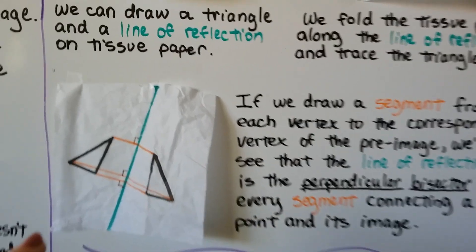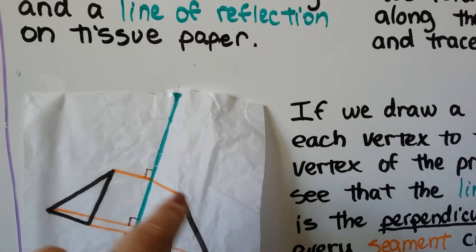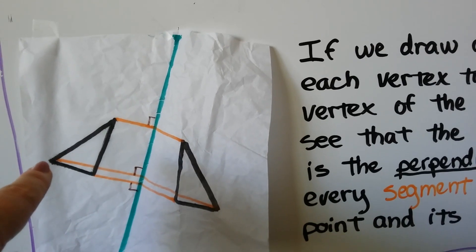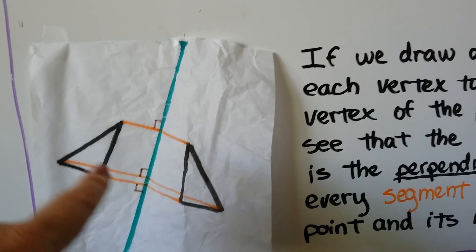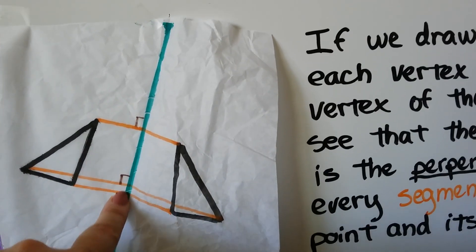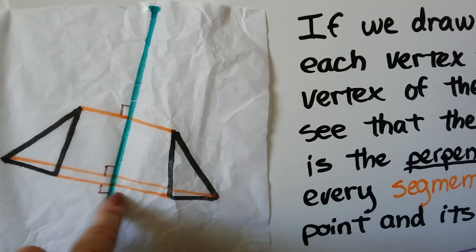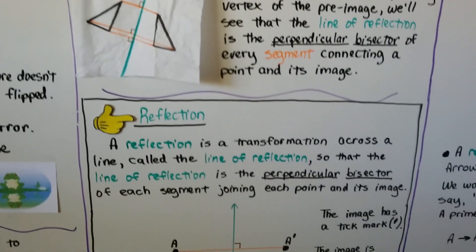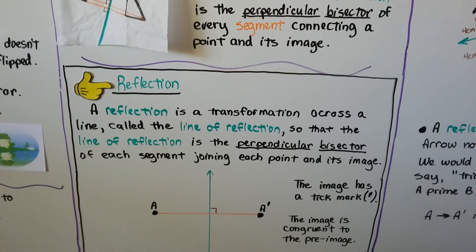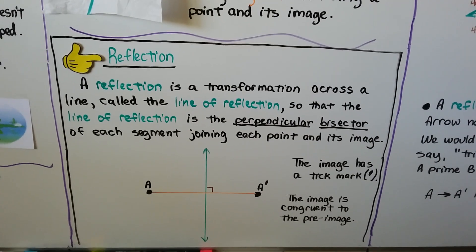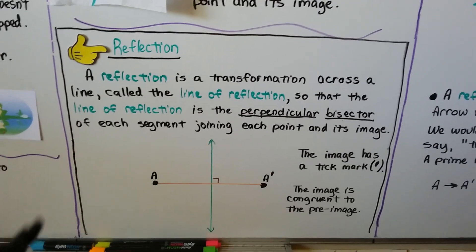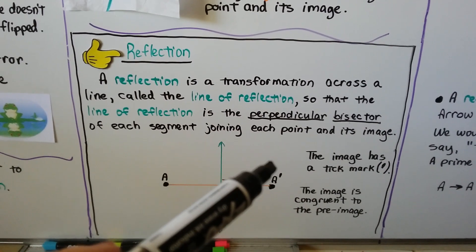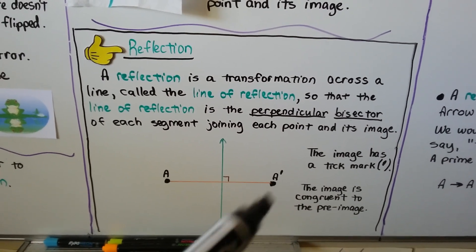If we draw a segment from each vertex to its corresponding vertex of the pre-image, we'll see that the line of reflection is the perpendicular bisector of every segment connecting a point and its image. Drawing a segment from corresponding points shows that the line of reflection is perpendicular bisector to each such segment. So, reflection is a transformation across the line of reflection such that the line of reflection is the perpendicular bisector of each segment joining each point and its image. These segments are perpendicular to the line of reflection, and the image has a tick mark — the image is congruent to the pre-image.